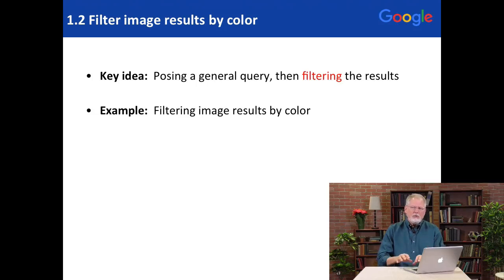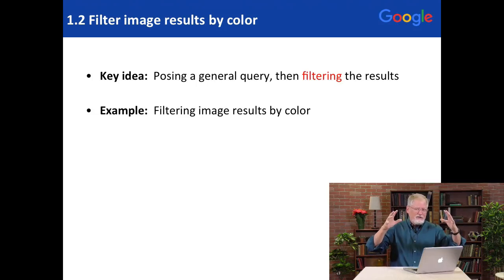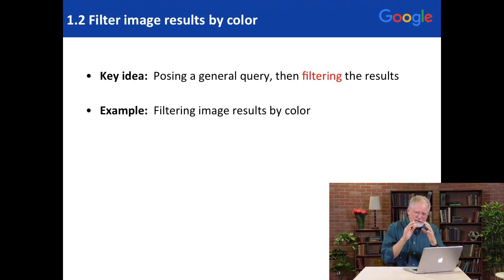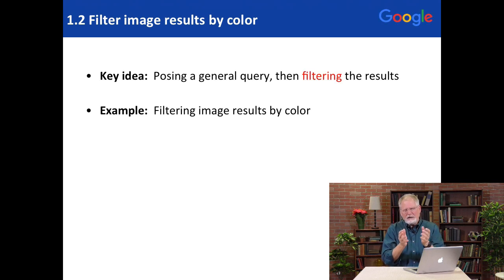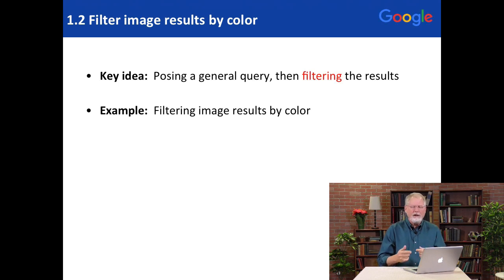The idea is you can go into Google and pose a query, and sometimes you get lots and lots of results — millions of results. But you're looking for something a little bit more precise than that. So the question is, how can I filter or limit the number of results by a particular property? In the image case, it's easy to imagine filtering by color, but that also sometimes has some context or semantic implications.